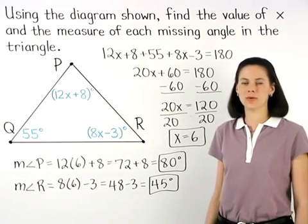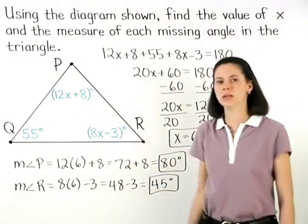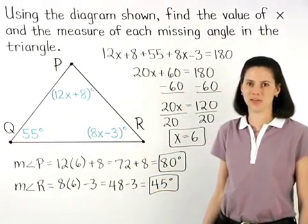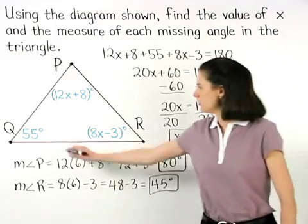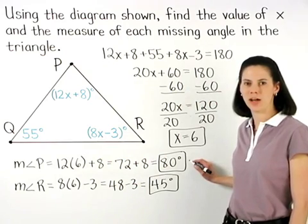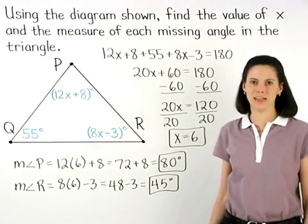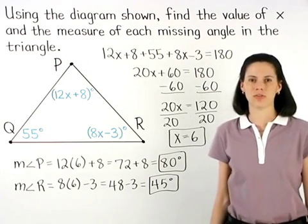Finally, we can check our answer by making sure that the three angles add to 180 degrees. 55 plus 80 is 135, plus 45 is 180. So our answer checks.